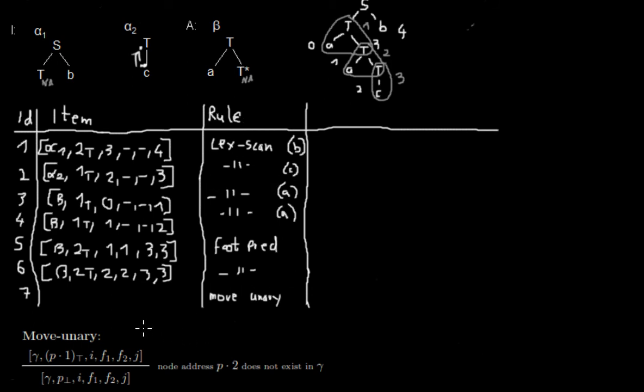So how does the definition say it? Let's have a look at which item we need. We have the alpha 2 tree and we are in the first daughter node at the top position. So we are using this item. It fulfills the conditions so that we can apply the move unary rule to it.